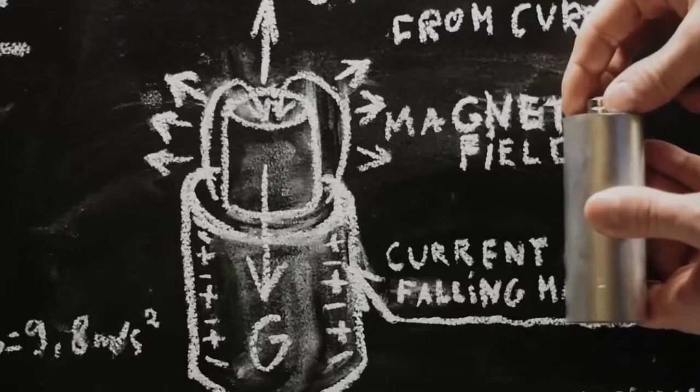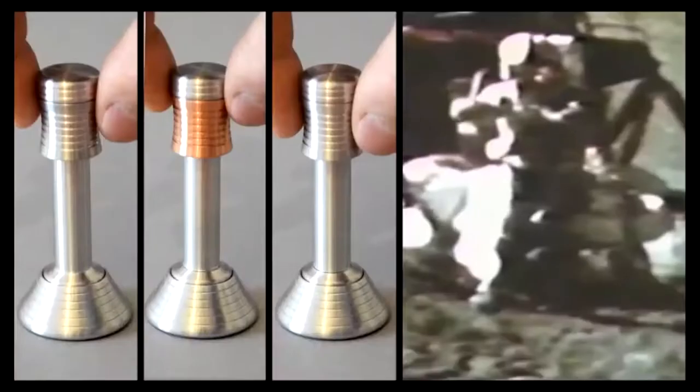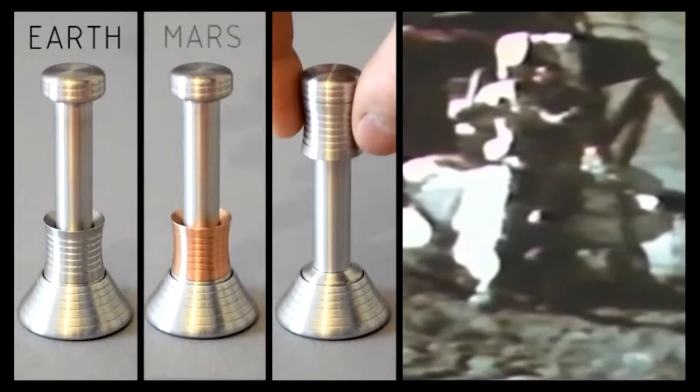Moondrop simulates the gravity of the moon by having a ring falling around a magnetic cylinder. Not just the moon, by having the ring of different materials, the Moondrop can simulate different gravities of different planets, such as Earth and even Mars.